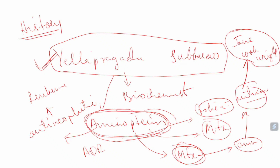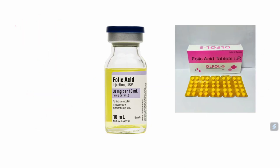Being Indian, we should be proud that Ella Pragada Subbarao developed a drug for cancer. From Asian countries like India, Pakistan, Bangladesh, and Sri Lanka, we don't have many scientists who developed drugs — we mostly copy drugs from other countries. Ella Pragada Subbarao is one notable exception, and he is from Andhra Pradesh. Now let's start the pharmacology of methotrexate.